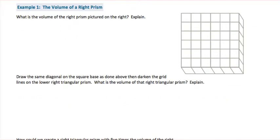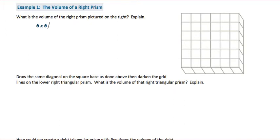In Example 1, we're asked what the volume of the right prism pictured on the right would be. Since our prism is 36 units in the interior and only one unit deep, we have length times width times depth, which gives us 36 cubic units, because it is filled with unit cubes.